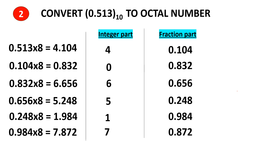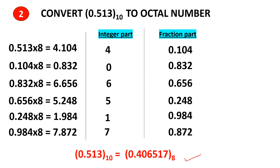In this case the fraction part does not become 0; it goes on without end, so we stop here. From the integer parts the numbers present here will form the octal number. This number will be the MSB and this will be the LSB. The answer should be written from top to bottom, so this is the answer.